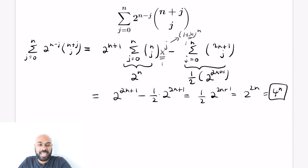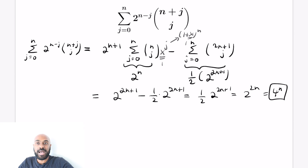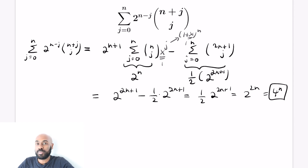We're left with 2 to the n plus 1 times 2 to the n, minus half times 2 to the 2n plus 1, which gives half of 2 to the 2n plus 1, which is 2 to the 2n, which is 4 to the n. We get the same result using series. One reason I like this approach is that it's very systematic and methodical — unlike the first proof, there's no superfluous 2n minus 1 choose n that we don't necessarily know what to do with.